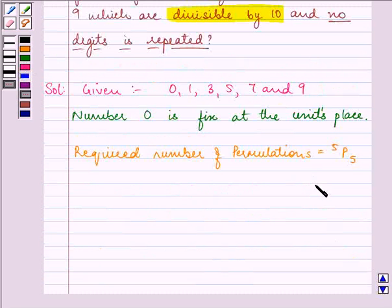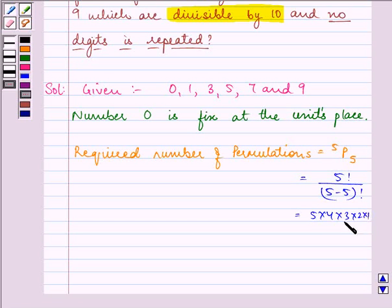That is 5 factorial divided by 5 minus 5 factorial. That is 5, 4, 3, 2, 1 getting multiplied by each other divided by 0 factorial. That is 120.